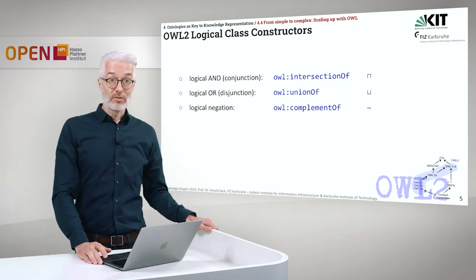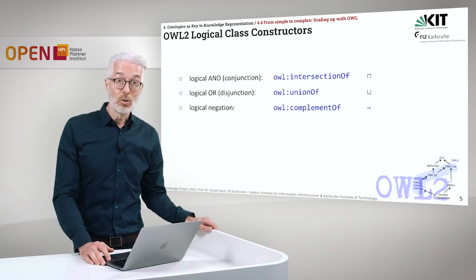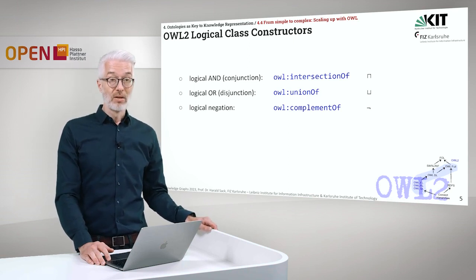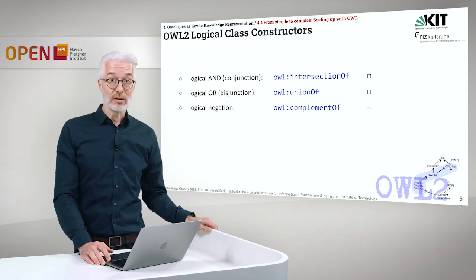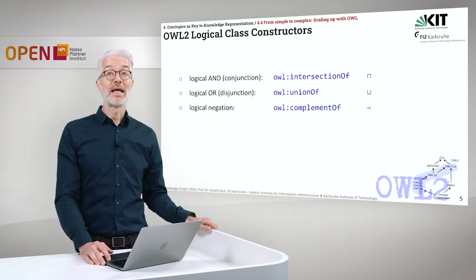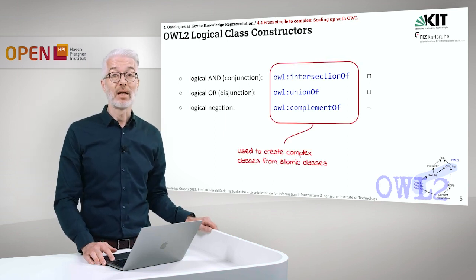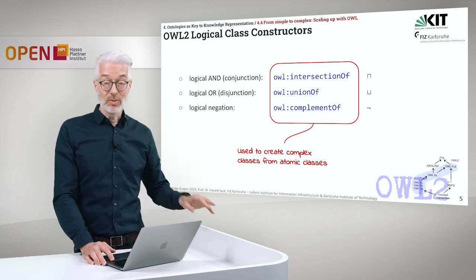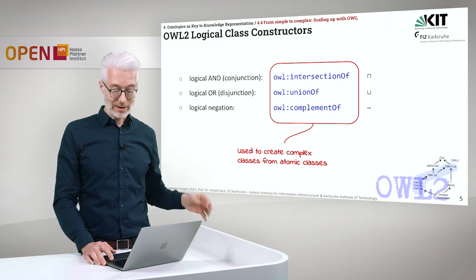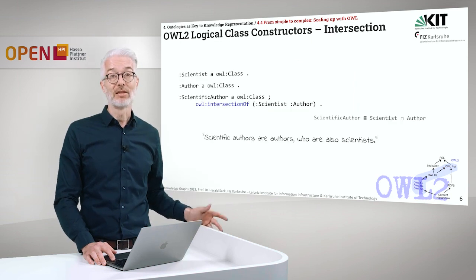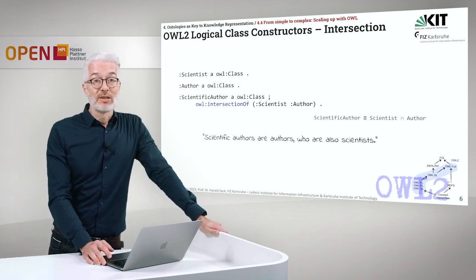Let's look at more class constructors. We have the logical AND — conjunction — which becomes OWL intersectionOf. We have the logical OR — disjunction — that's OWL unionOf. And we have logical negation, which is OWL complementOf. These constructors are used to build more complex classes from simple atomic classes. Let's first look at intersection.